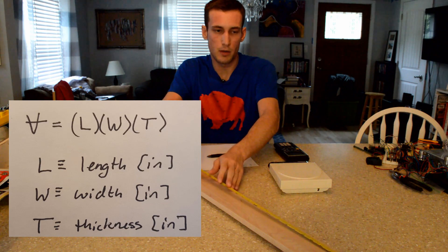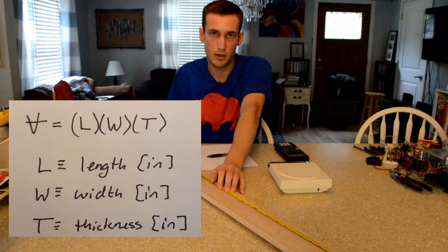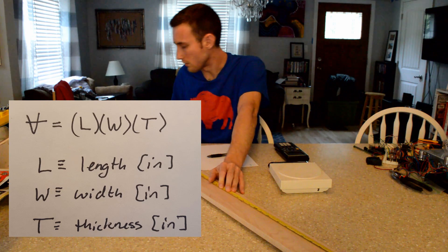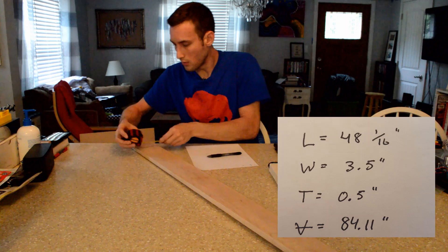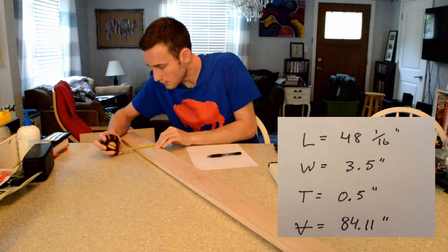So I'm going to take the piece of wood and measure the length. The volume is just the length times the width times the thickness. So first I'll measure the length, which is 48 and 1/16 inches. The width is 3 and a half inches.